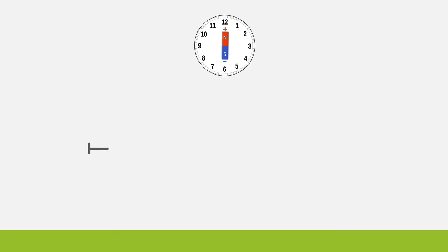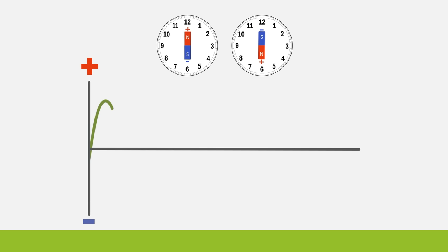Let's focus on line one. It's at its peak current when the north pole points to both twelve and six o'clock positions. It is at zero current when the north pole points to three and nine o'clock.